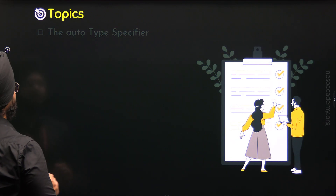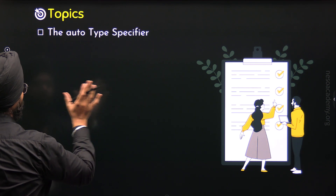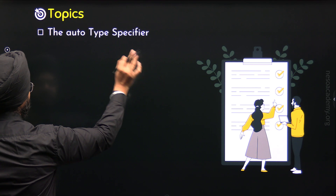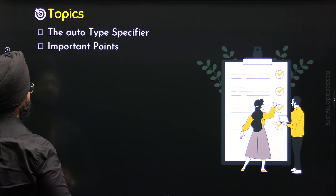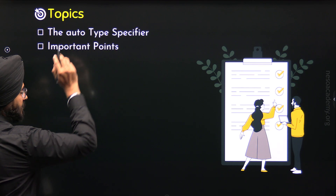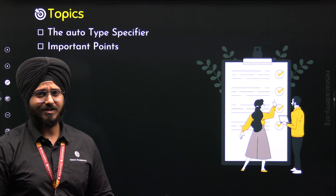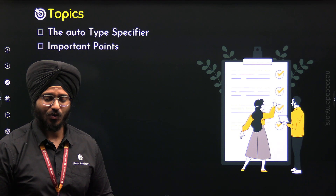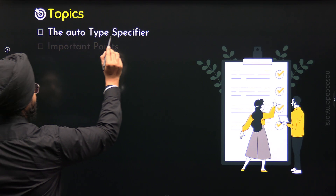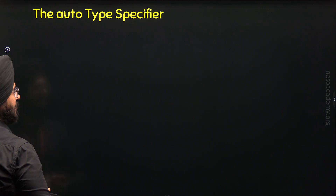The first topic of this lecture is the Auto Type Specifier. First, I will make you understand what is the Auto Type Specifier. Then we will move to the next topic where we will discuss some important points about the Auto Type Specifier. So these are the two topics which we need to understand in this lecture. Let's get started with the first topic, that is the Auto Type Specifier.